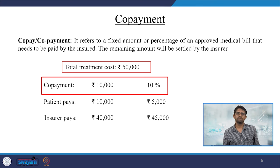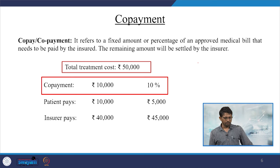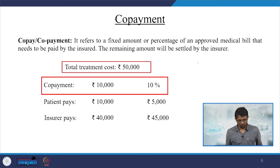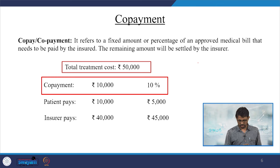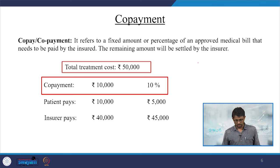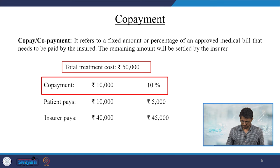Co-payment refers to a fixed amount or percentage of an approved medical bill that needs to be paid by the insured; the remaining amount will be settled by the insurer. For example, if the total treatment cost is 50,000 rupees and co-payment is 10,000 rupees (that is 10 percent of the total), the patient pays 10,000 and the insurer pays 40,000.